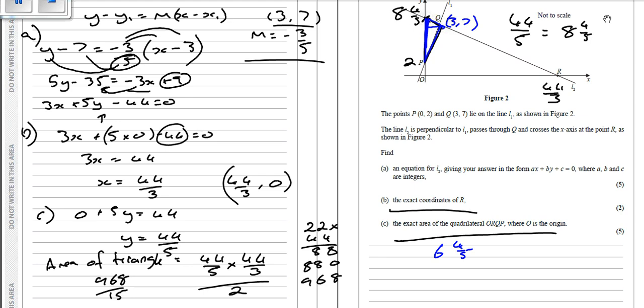So therefore, if we consider the triangle, we've got 6 and 4 fifths there, and we've got the height there, which is 3. So we're going to do 6 and 4 fifths, which we can also write as 34 over 5. So 34 over 5 times by 3 over 1, and we divide that by 2 because we're doing the area of that triangle. So that's going to be 102 over 5, then divide it by 2. So that's going to be 51 over 5.